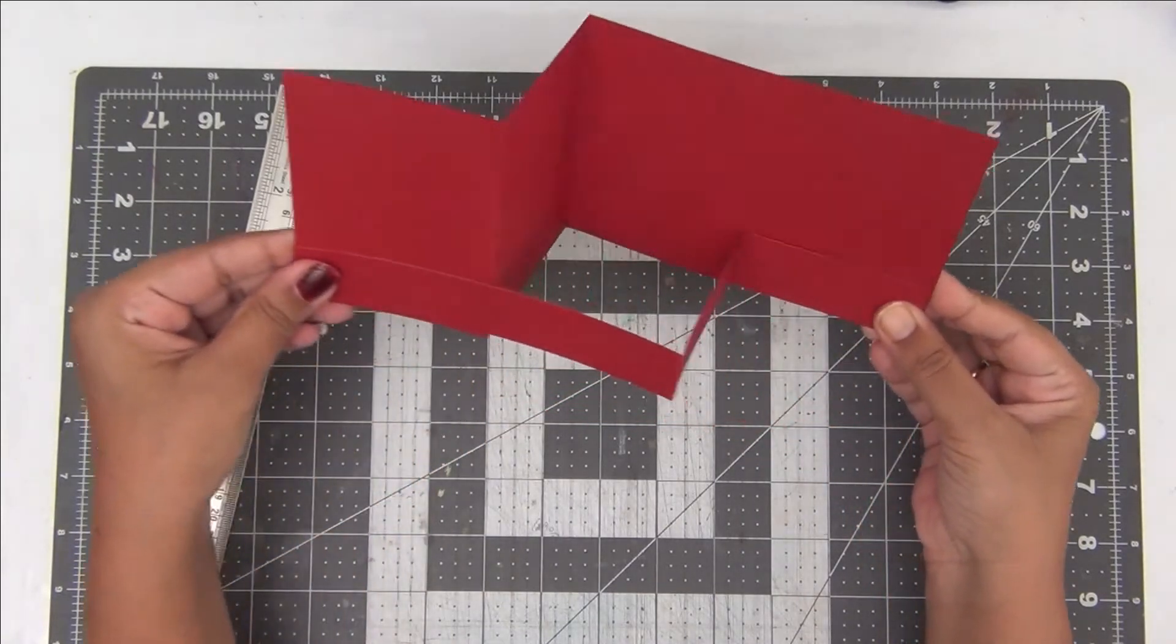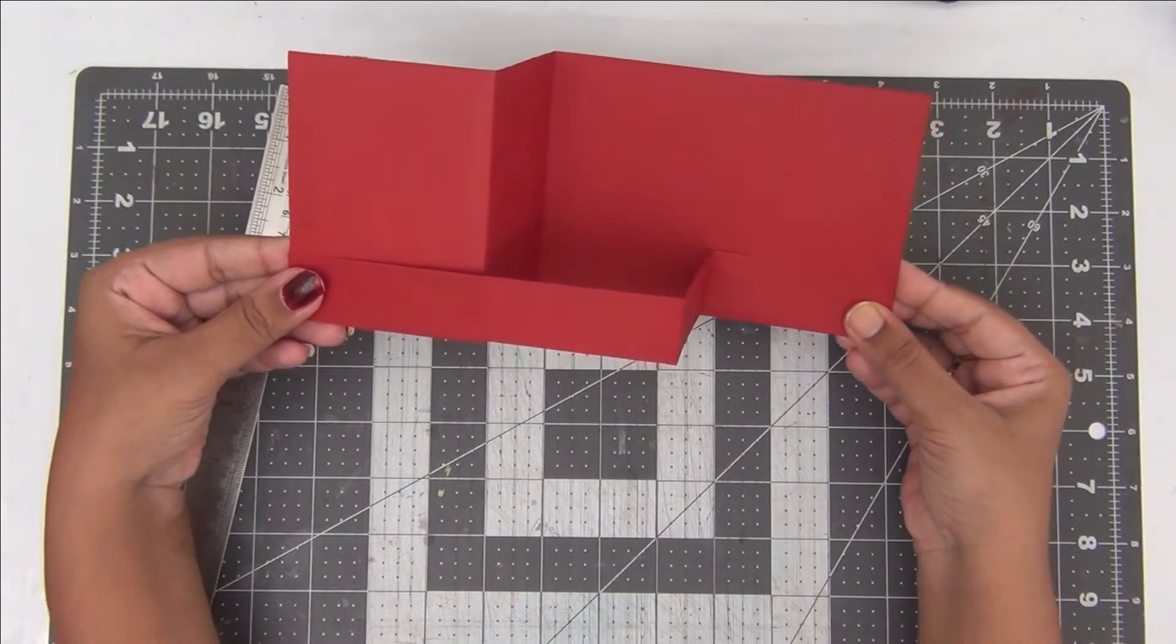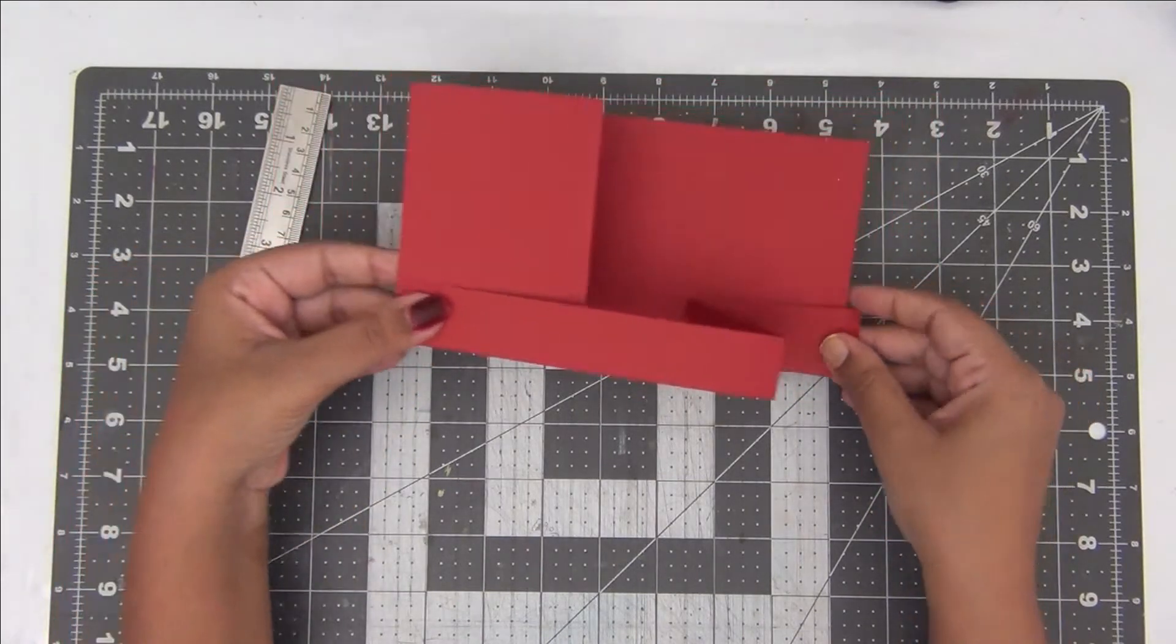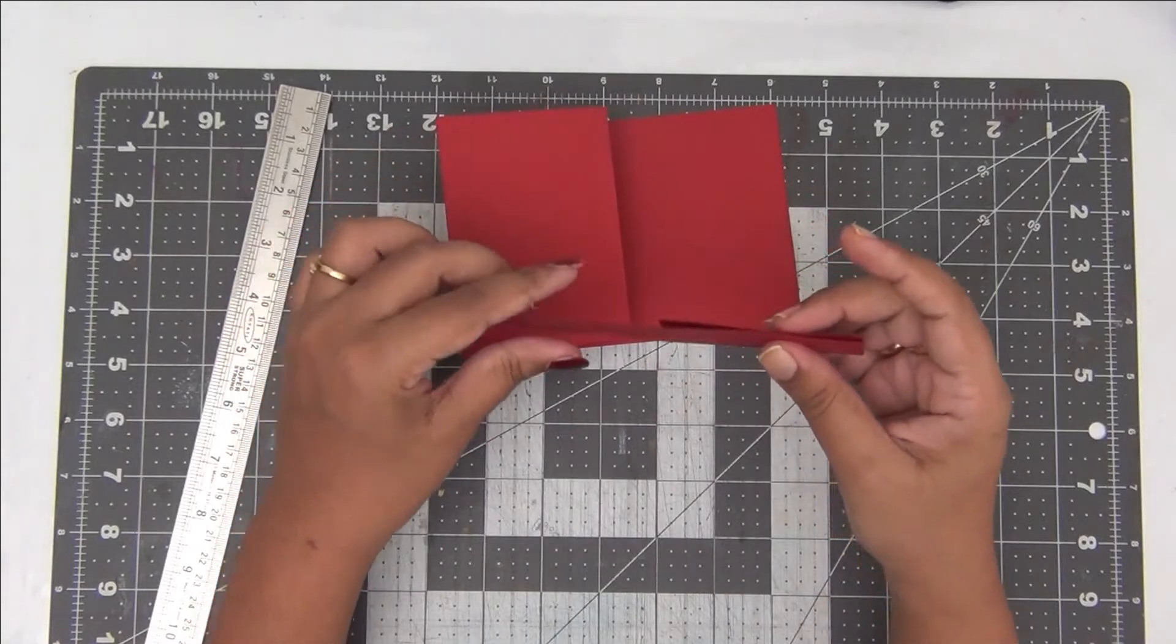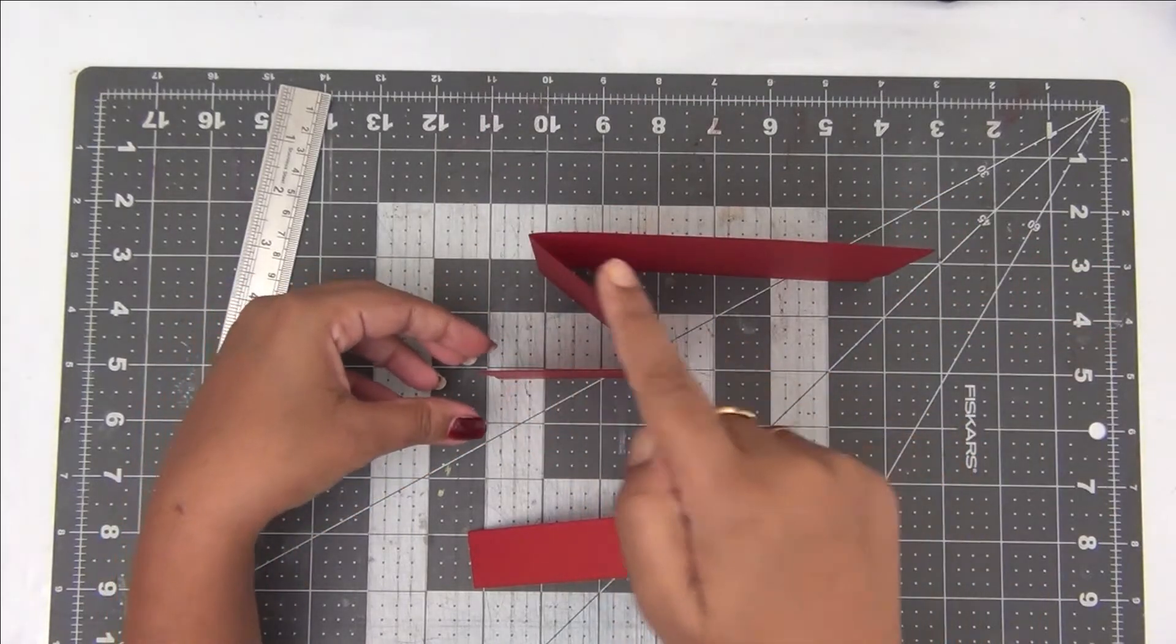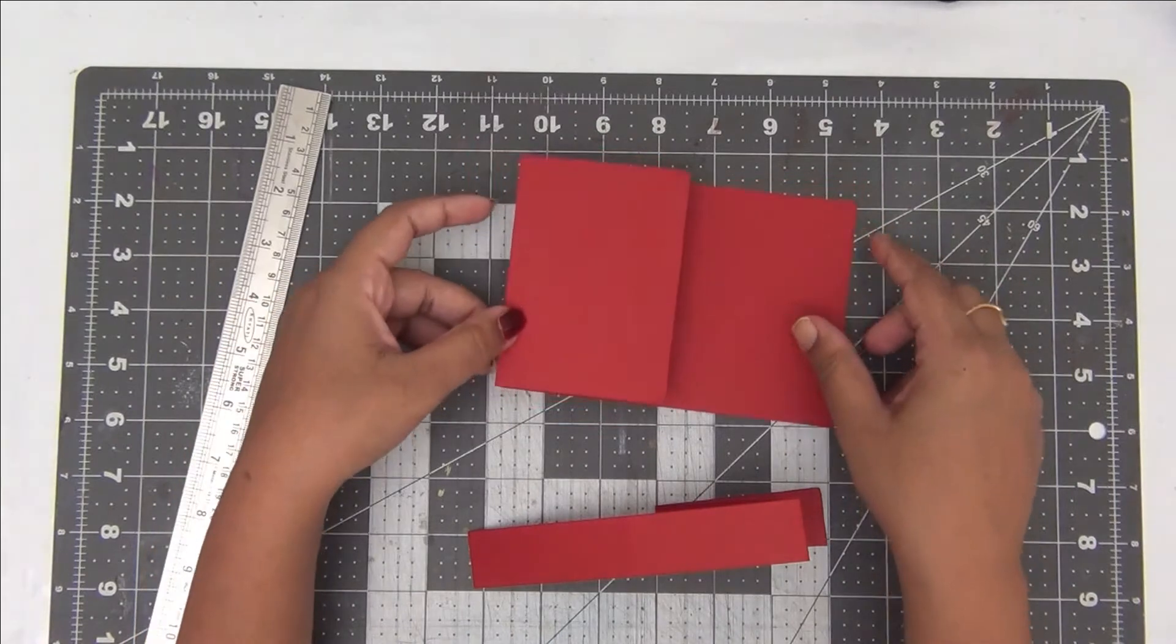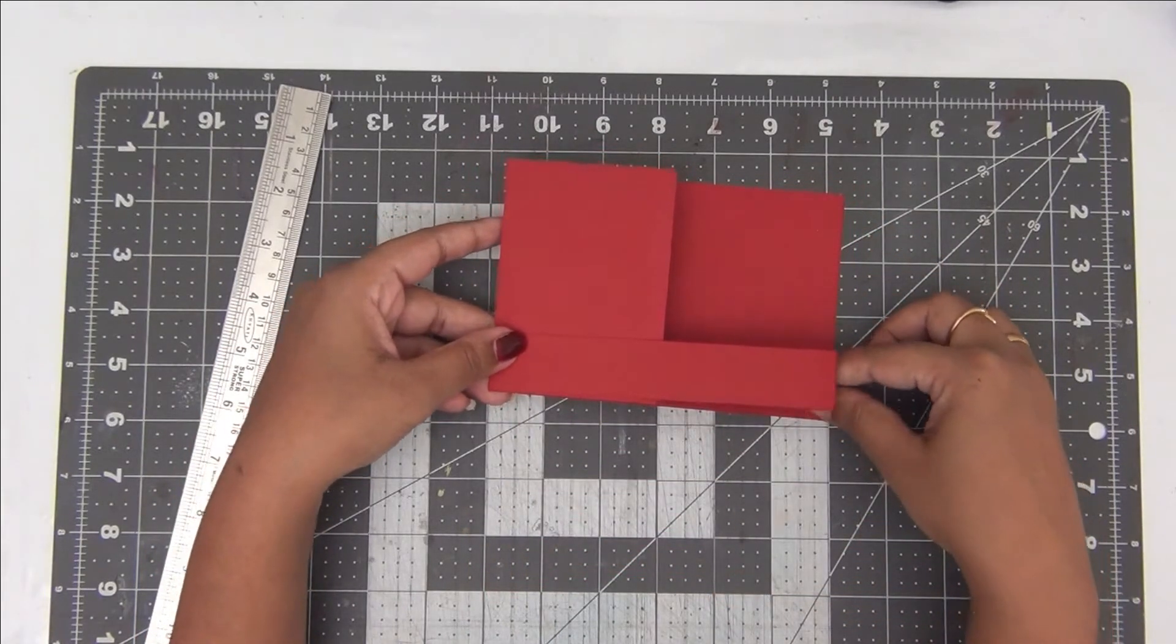I am just exchanging the longer pieces here. So the long piece of the 1 inch card piece will be coming and adhering here. So when my card opens, it looks like this. So this is a basic Z fold card. This is called a Z fold card because when you open it, it looks like a Z. So you can see here it looks like an inverted Z or a mirror image Z here.